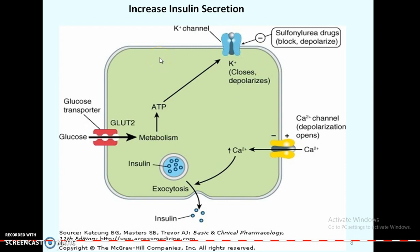Regarding the mechanism of increasing insulin secretion by the pancreas: glucose enters through glucose transporters and its metabolism leads to depolarization of potassium channels. This causes calcium ion channels to open, and the resulting rise in calcium leads to exocytosis of insulin. Sulfonylurea drugs block the potassium channels, thereby stimulating insulin secretion.